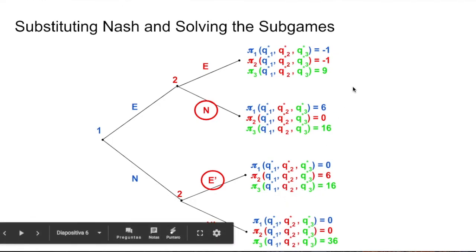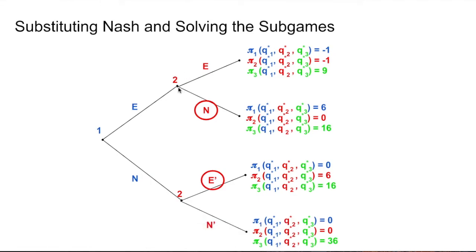And now looking at this, is firm number two, the next in the game. So we see that if he is going to choose E or N, we'll pay attention to the payoff function of firm number two. And in this case, if he chooses E, the payment is going to be minus one. And if he chooses N, it's going to be zero. So this firm is going to choose zero and it's going to go for N strategy. That is a payment of zero. It's better than minus one.